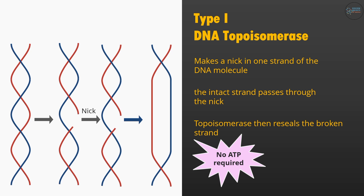In summary, Type 1 DNA topoisomerase makes a nick in one strand, the intact strand passes through the nick, and then ligase activity seals the broken strand. Importantly, Type 1 DNA topoisomerase does not require ATP to perform these nuclease and ligase activities.